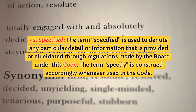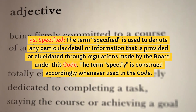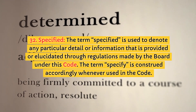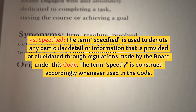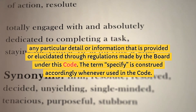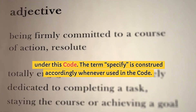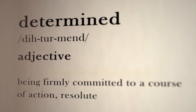32. Specified. The term 'specified' is used to denote any particular detail or information that is provided or elucidated through regulations made by the board under this code. The term 'specified' is construed accordingly whenever used in the code.